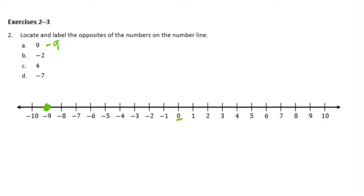The opposite of negative 2: here's negative 2, so the opposite of negative 2 would be 2. The opposite of 4: there's 4, the opposite is negative 4. And the opposite of negative 7 would be 7. So labeling them: A was negative 9, B was 2, C was negative 4, and D was 7.